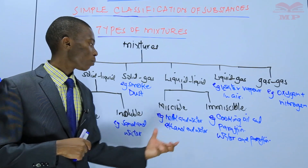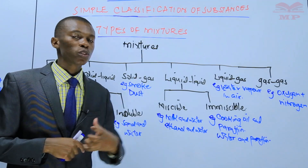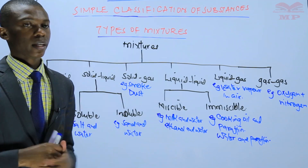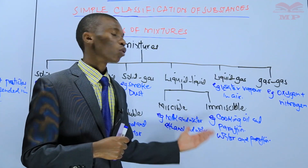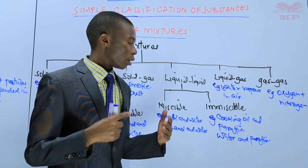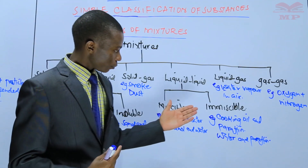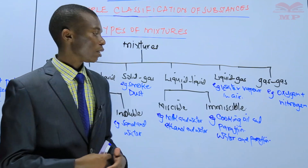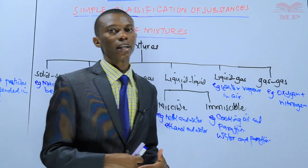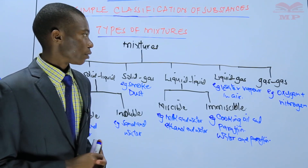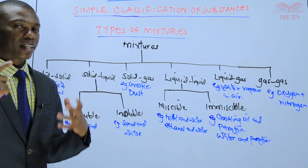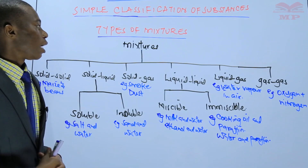For liquid-liquid mixtures: miscible examples include milk and water, and ethanol and water — they mix to form a uniform solution. Immiscible examples include cooking oil and paraffin, and water and paraffin — they form two layers and do not mix. For liquid-gas: water vapor in air. For gas-gas: oxygen, nitrogen, carbon dioxide, neon, and argon in the atmosphere.